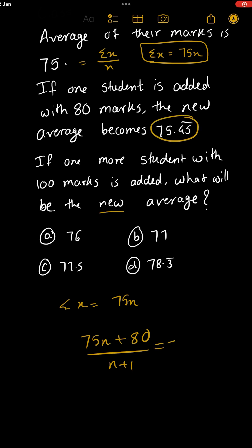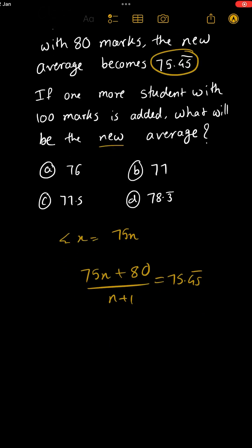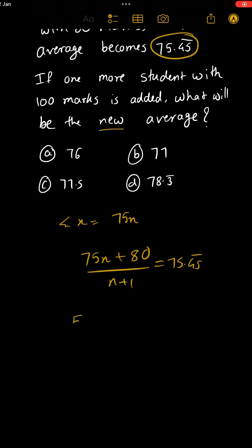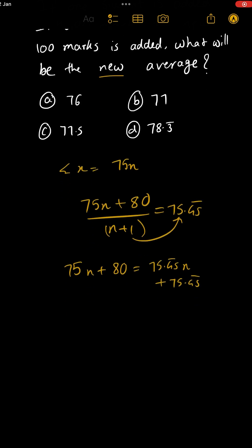They have already given that the new average becomes 75.45 recurring. So we solve: 75N + 80 = 75.45 recurring × (N + 1). Rearranging, taking all N terms to one side: 75.454545N minus 75N equals 0.454545N.